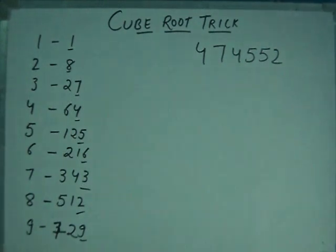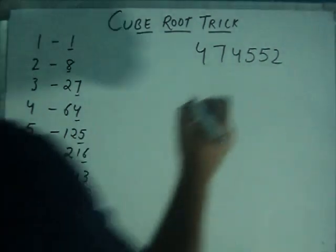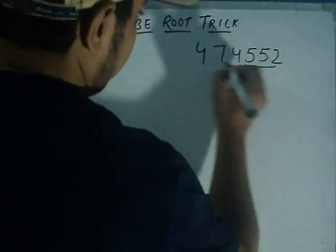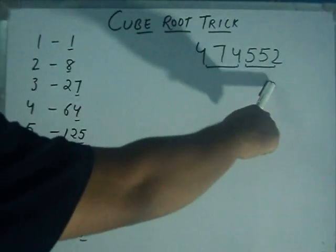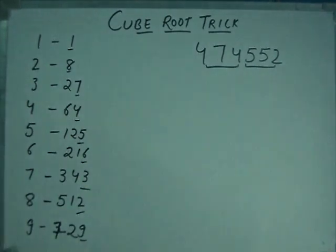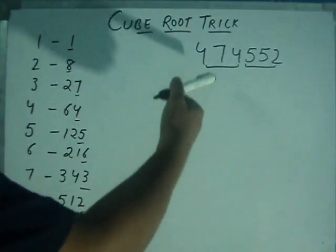That is our second step. Divide this number into two parts. Like this part and this part. Our first part contains the last three digits of the number, and the remaining digits are in the other part.